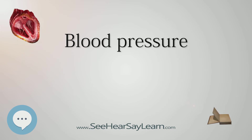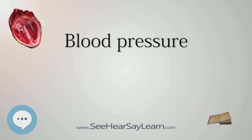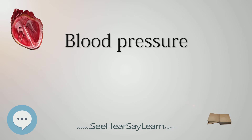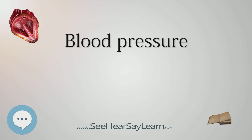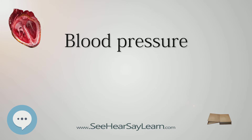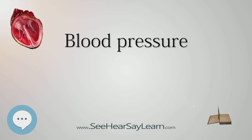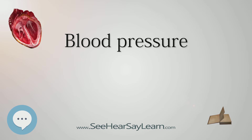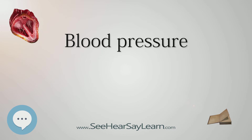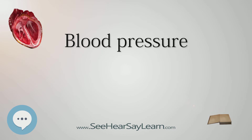Persistent hypertension is one of the risk factors for strokes, heart attacks, heart failure, and arterial aneurysms, and is the leading cause of chronic kidney failure. Even moderate elevation of arterial pressure leads to shortened life expectancy. At severely high pressures — mean arterial pressures 50% or more above average — a person can expect to live no more than a few years unless appropriately treated.